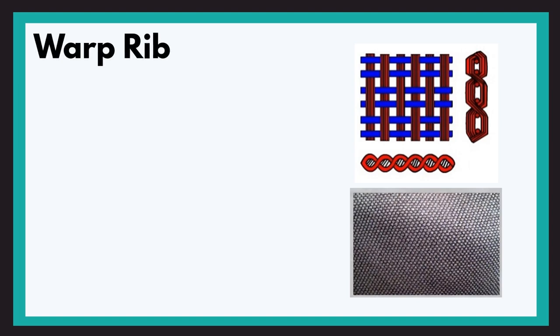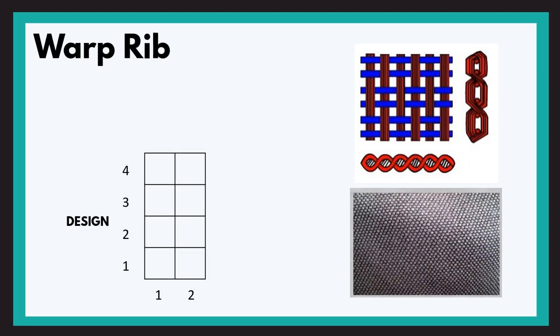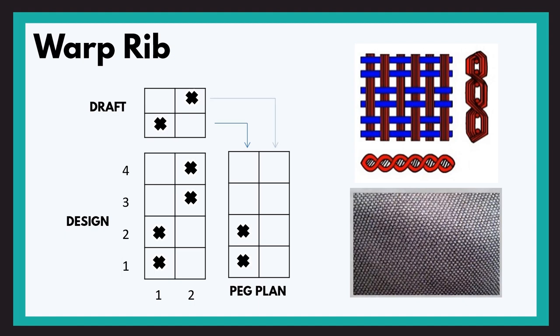Let us first see the warp rib structure. We will mark a 2 up 2 down warp rib structure. For the first warp thread: the warp is up for the first and second picks, and below for the third and fourth picks. For the second warp: it is down for the first and second picks, and up for the third and fourth picks. We mark the draft and pick plan as already studied. As you can see in the diagram, strands or ribs appear in the warp direction — this is the effect produced in the warp rib structure.